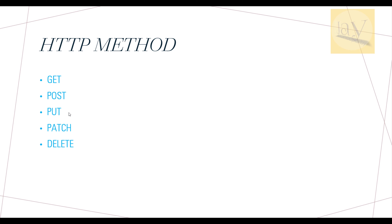PUT is for updating an object. PATCH is used when you want small or partial changes — you are updating only some small changes to an object. Instead of using PUT for the entire object, for partial content updates you use PATCH.